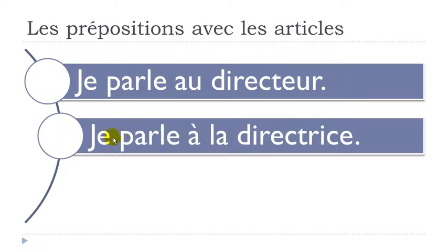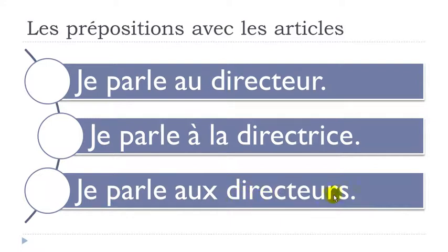For the feminine form: je parle à la directrice - nothing happens here, you still have your preposition and then your article. Nothing changes for the feminine form. For the plural form: je parle aux directeurs - you combine A plus LES and you get AUX, but phonetically you pronounce it AU. So the plural form, whether masculine or feminine, gives you AUX, pronounced AU.